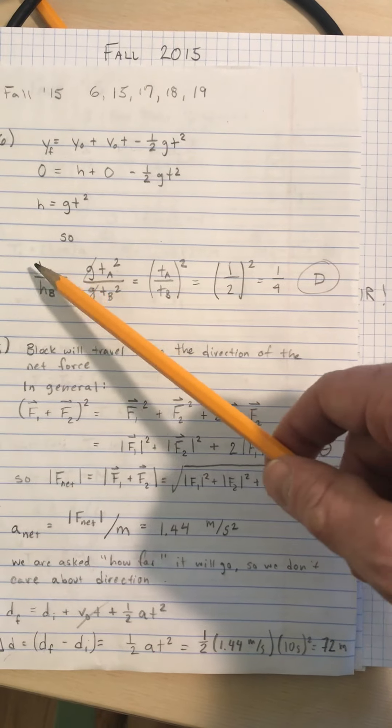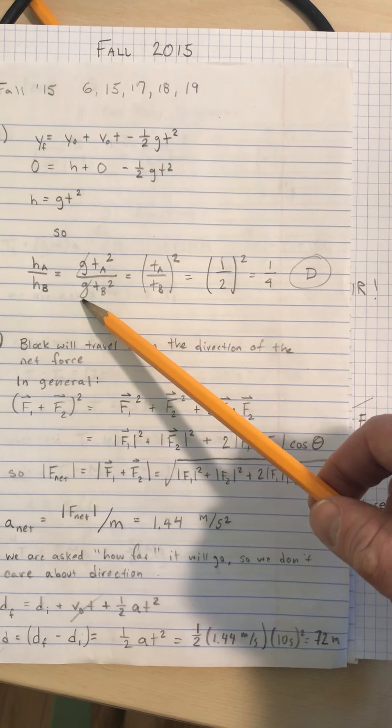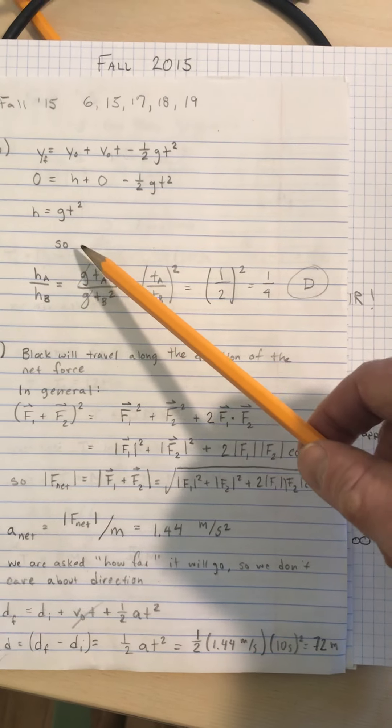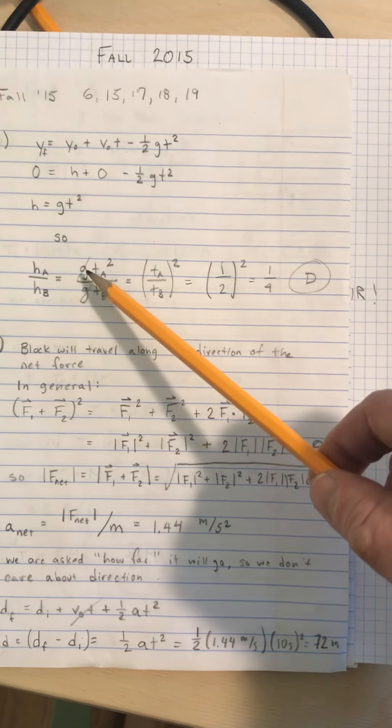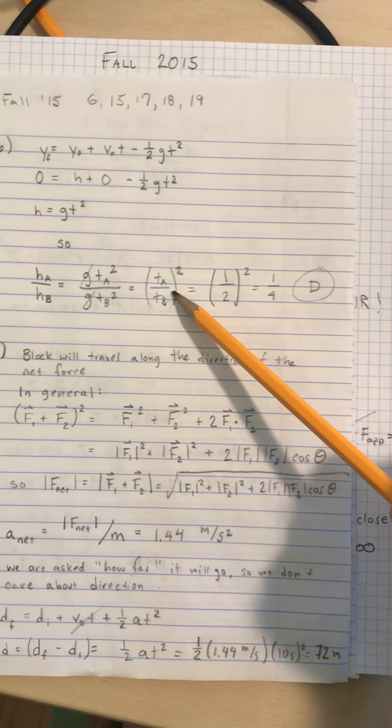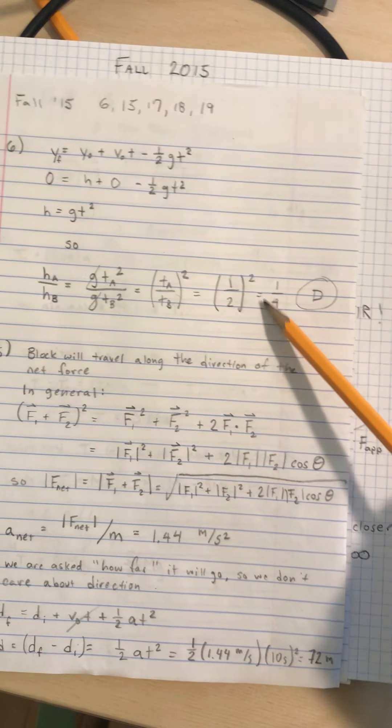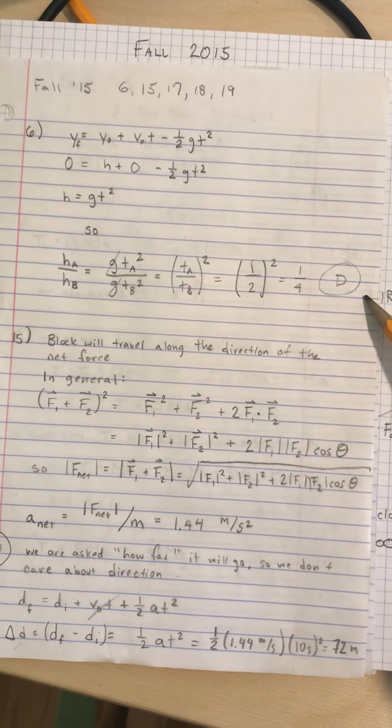So HA over HB equals one half GT_A squared over one half GT_B squared. The halves cancel, the G's cancel, and we get the ratio of T_A to T_B squared. And since T_B is twice as long as T_A, that's one half squared, which is one fourth, and the answer is D.